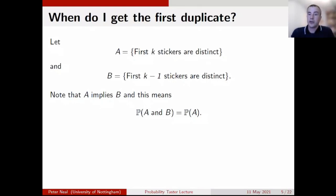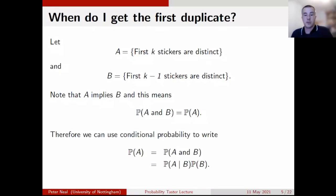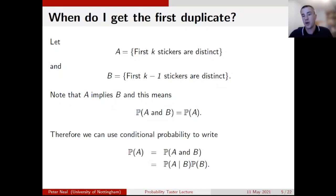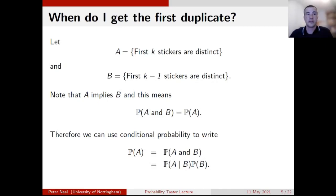This lets us rewrite the conditional probability expression. The probability of A and B equals the probability of B (i.e., the first k minus one stickers are distinct) times the probability of A given B (i.e., the k-th sticker is a new one, given the first k minus one are all different). We can then use the other side of the expression to give us the probability we actually want — that all k stickers are different.